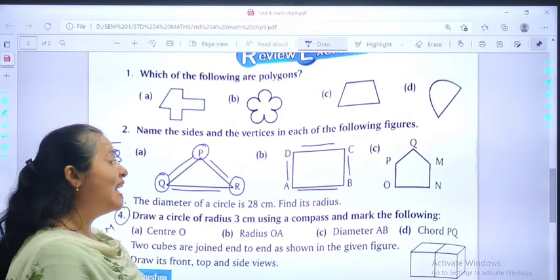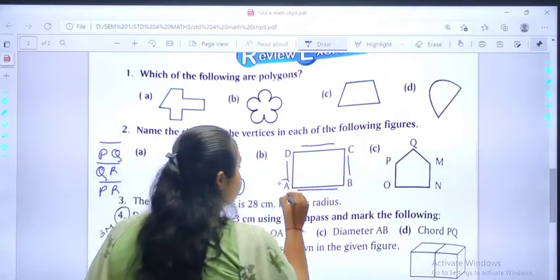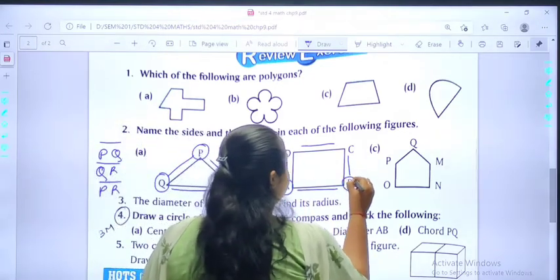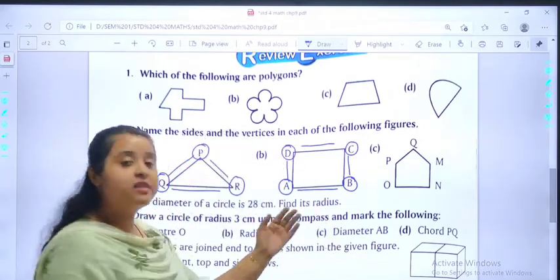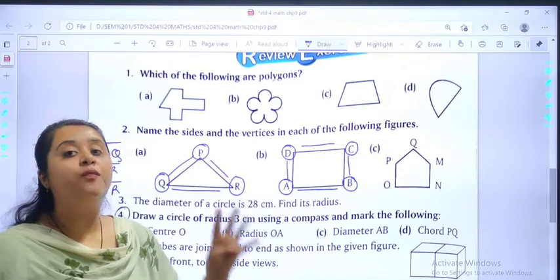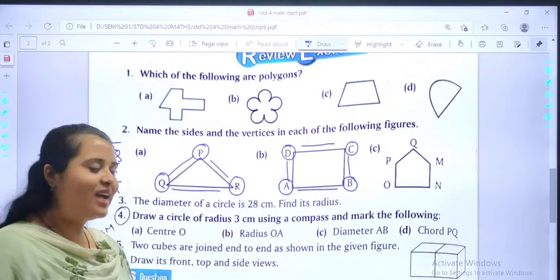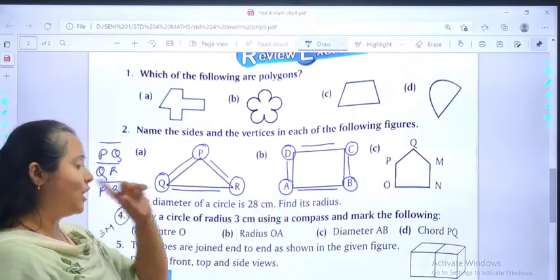And the vertices will be vertex A, B, C, and D. In this case, we will be having the 4 vertices. Let's move to the C question.